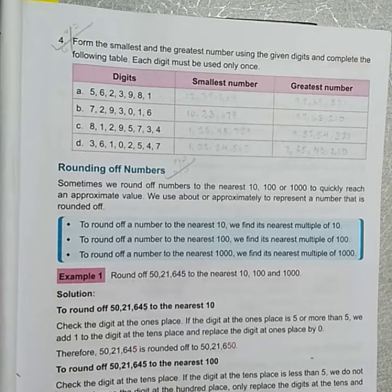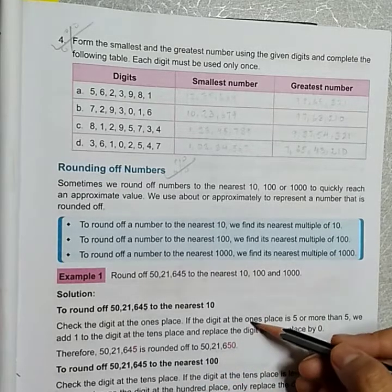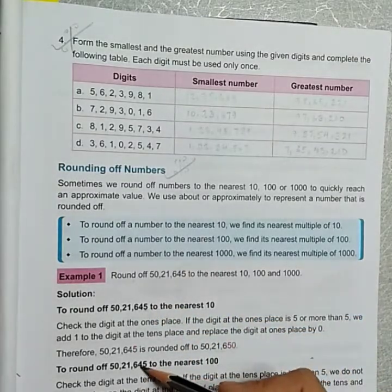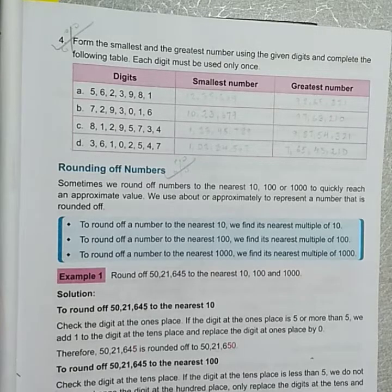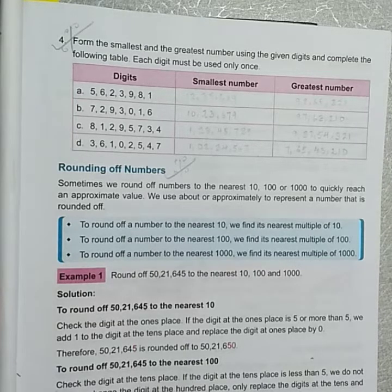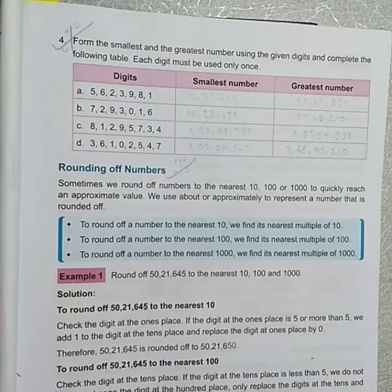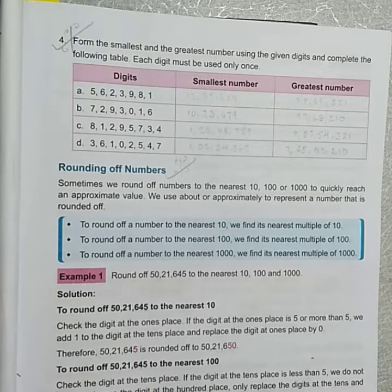To the nearest thousand: The answer will be fifty lakh twenty two thousand. We look at the hundredth place. If it is five or more, we will add one to the thousandth place. The answer will be 50,22,000.